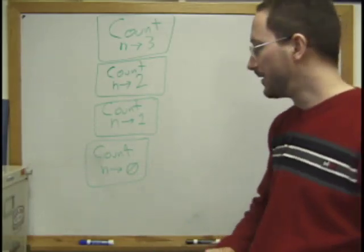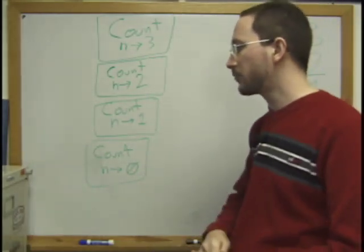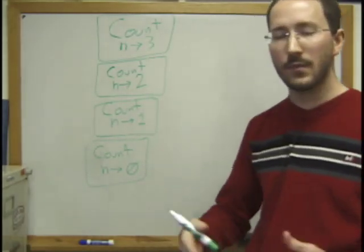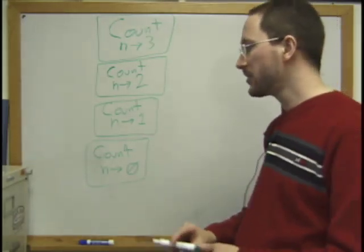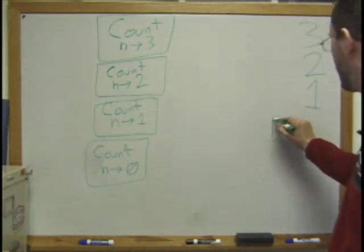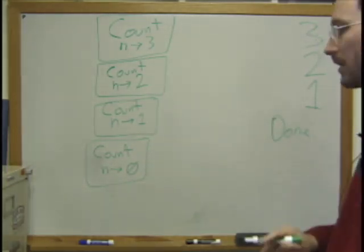It's equal, but it's not bigger. And so instead of doing the print n and the count n minus 1, instead we do the else clause of the if statement, and we just print done. So we get done printed on the board.